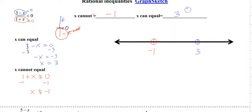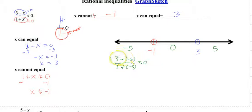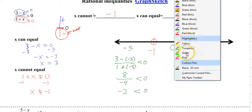We can pick any value we want: anything less than negative 1, say negative 5; anything between negative 1 and 3, so 0; and anything bigger than 3, so 5. We take our original equation and plug in negative 5. So 3 plus 5 is 8 over negative 4, which is negative 2, which is less than 0 — it's what we're looking for, so we shade.